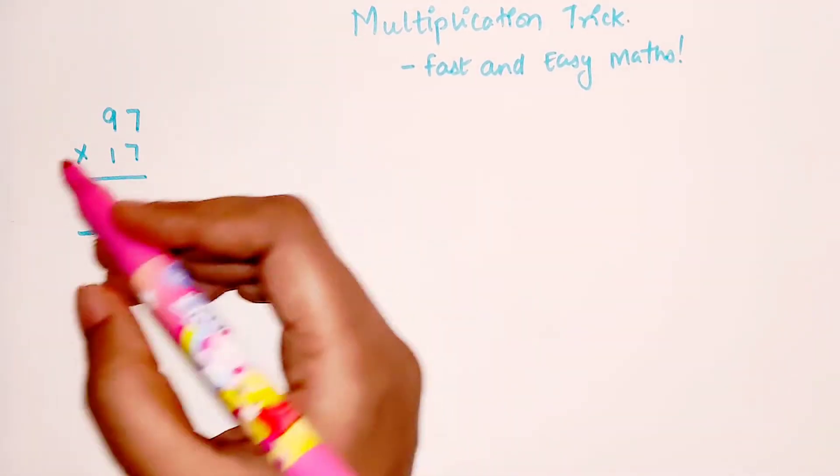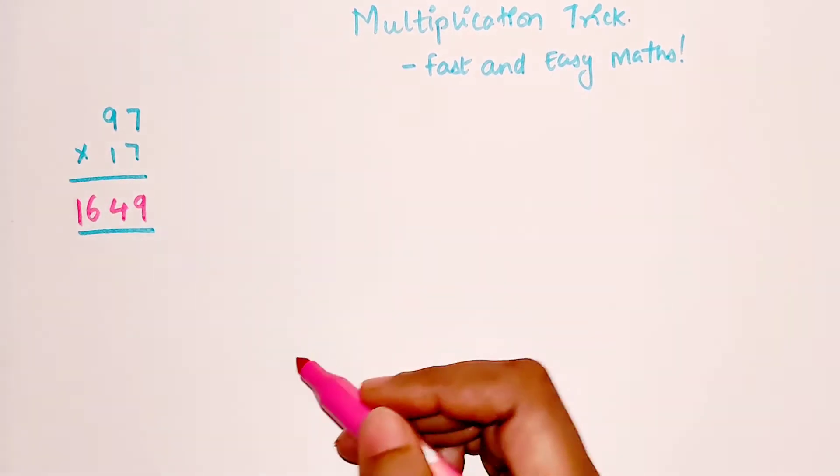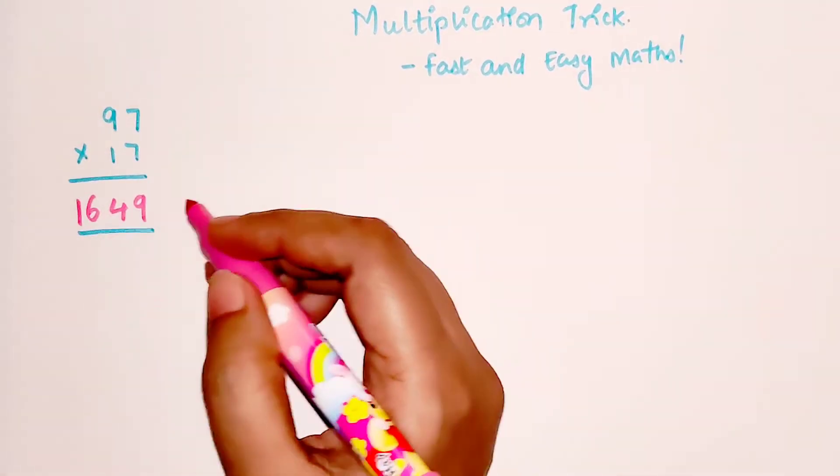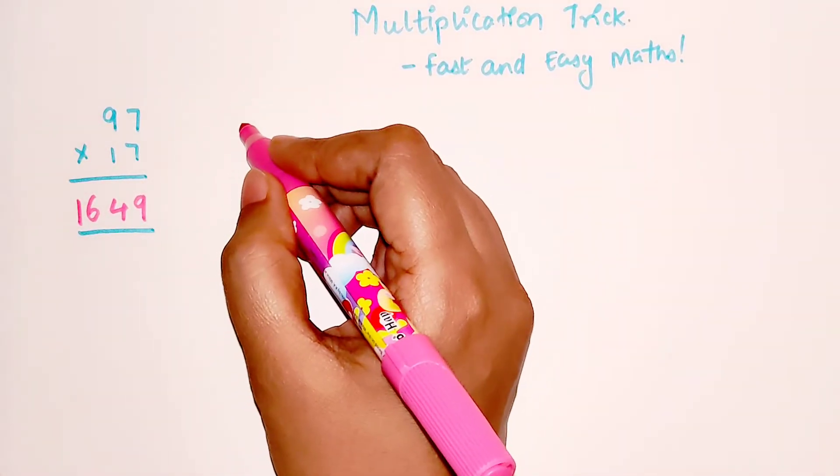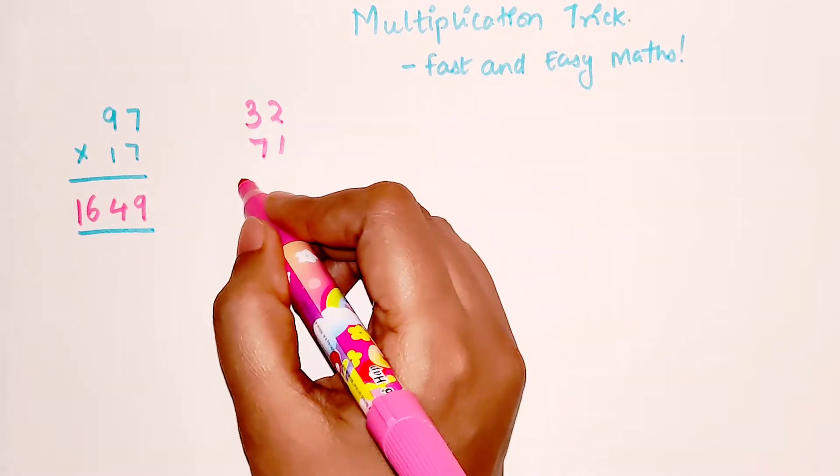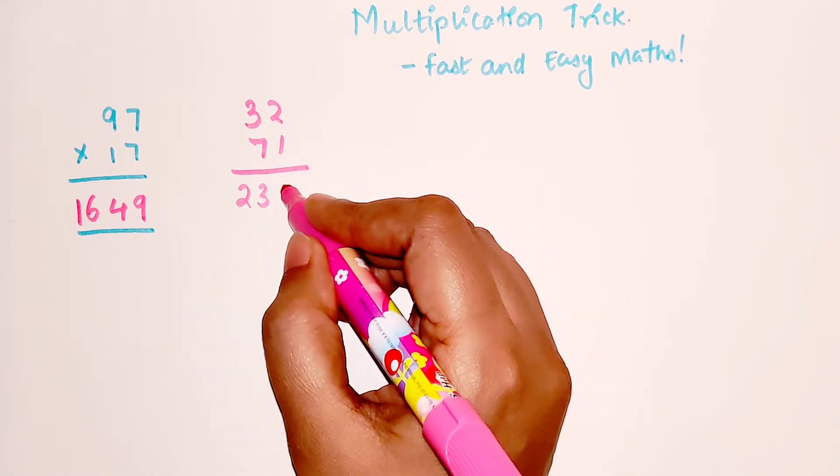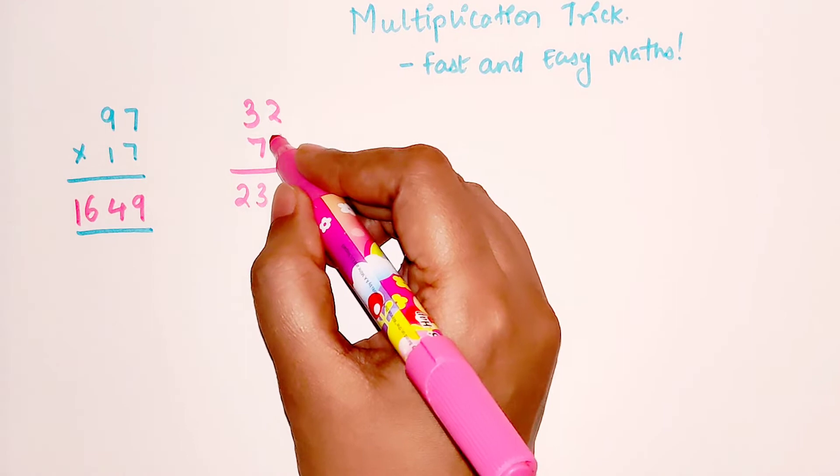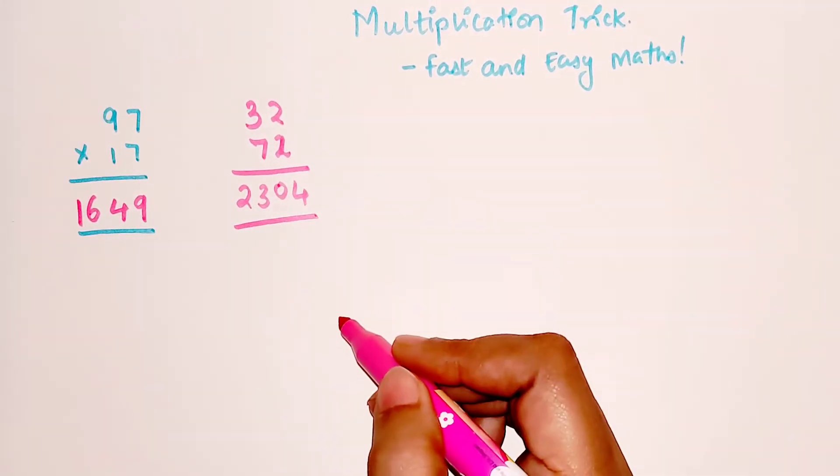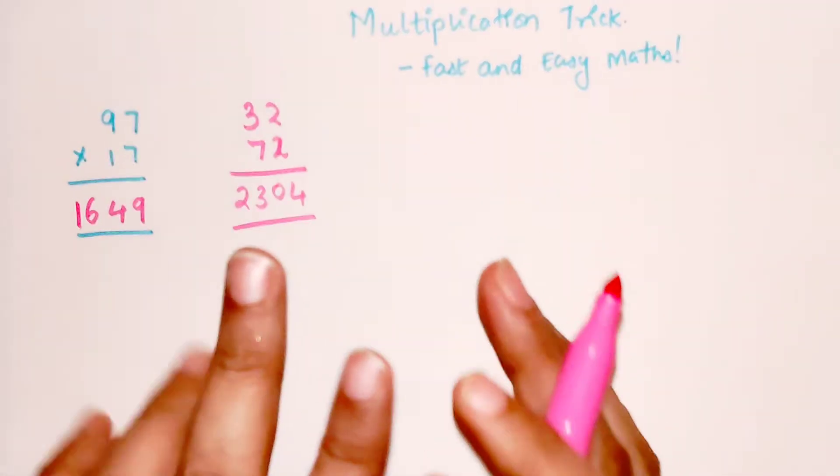Here I can tell you the answer for this one is 1649. You might be thinking I've written down the answer somewhere, that's not true. Let's take something else, 32 times 71. The answer for this one is 2304.